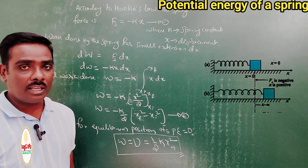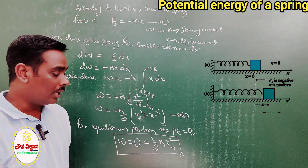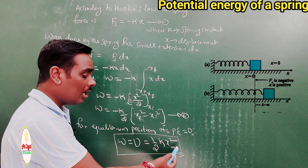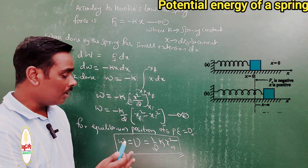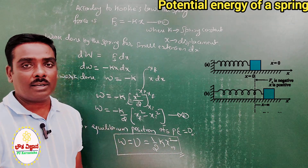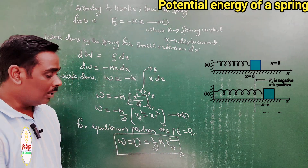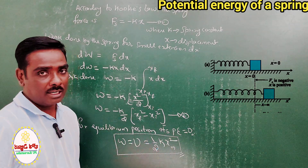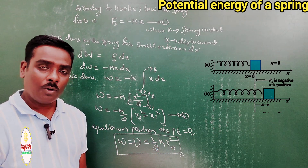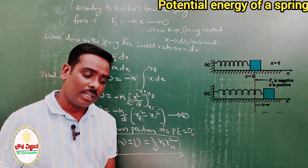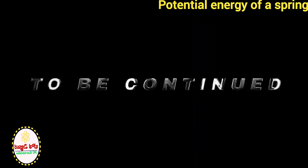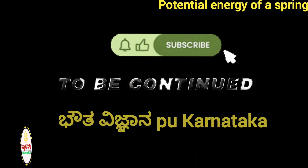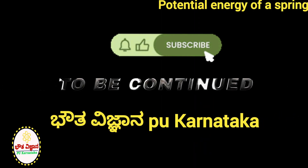This derivation is worth 3 marks in your exam. This is the complete derivation. The most important formula is W = (1/2)Kx². Okay, thank you dear students.